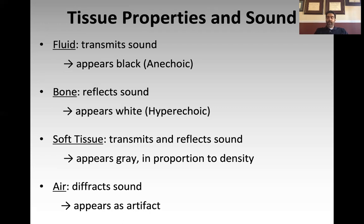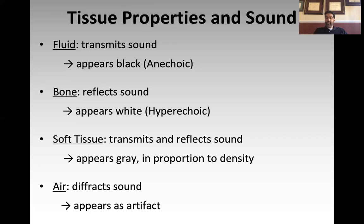Finally, if you're looking at air on ultrasound — air is a very efficient diffractor or scattering medium of sound. When the ultrasound wave hits an air-containing structure, all the sound scatters or diffracts, and that creates an artifact on the screen. When we talk about lung ultrasound in the next talk, we'll discuss how to interpret those artifacts. So: fluid transmits sound and appears black or anechoic; bone reflects sound and appears white with a shadow; soft tissue gives varying shades of gray; and air causes sound to scatter, creating an artifact.